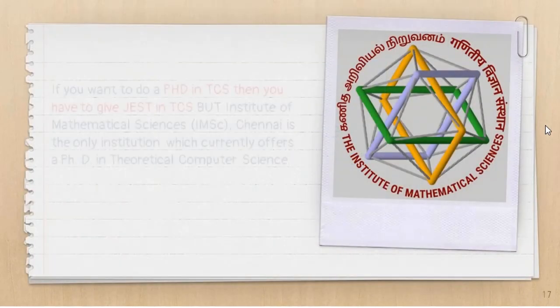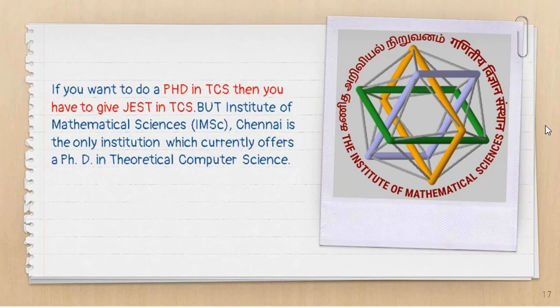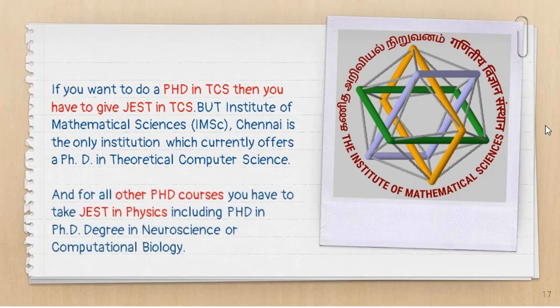If you want to decide how to choose between physics or theoretical computer science: if you want to do a PhD in theoretical computer science, you have to appear for JEST in theoretical computer science. Note that the Institute of Mathematical Sciences, Chennai is currently the only institution in the country offering a PhD in theoretical computer science. If you want to do a PhD in any other course — including neuroscience and computational biology — you have to take JEST in physics.